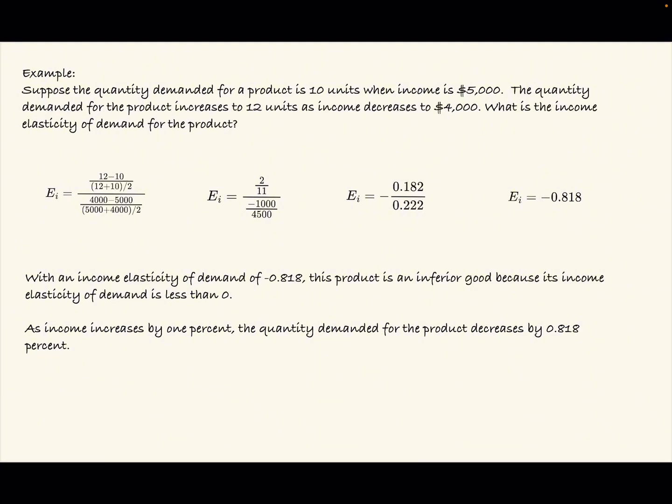After simplifying the fractions, we have the income elasticity of demand, or EI, equals 2 over 11, all divided by negative 1,000 over 4,500. After further simplification, we have EI equals negative 0.182 divided by 0.222.